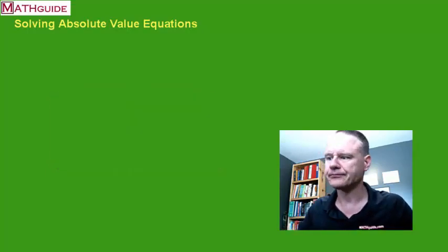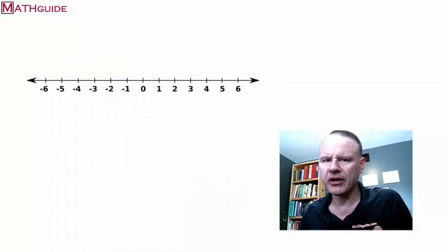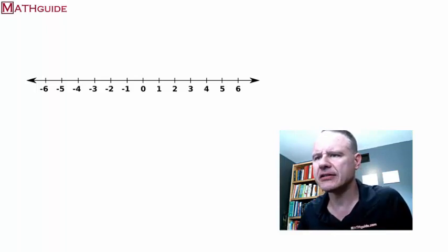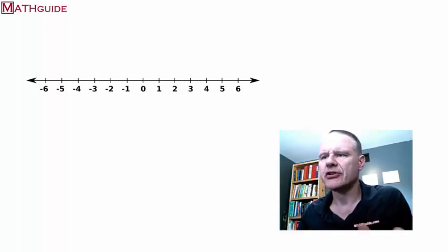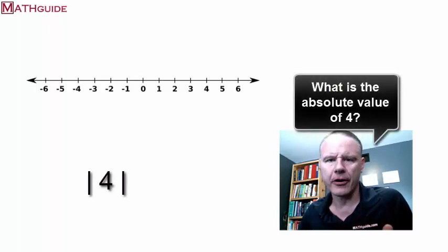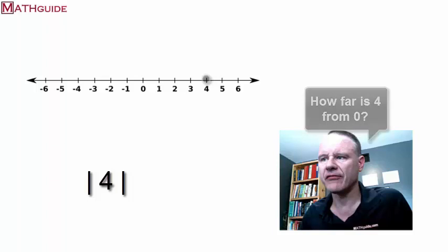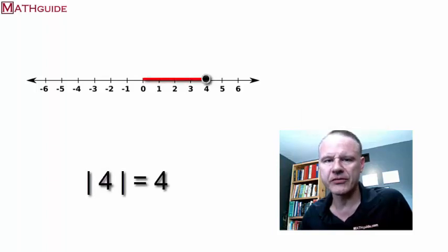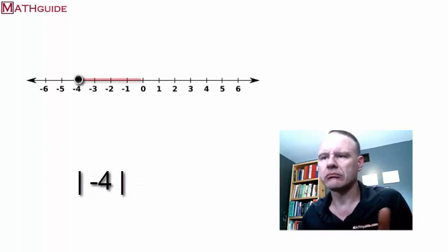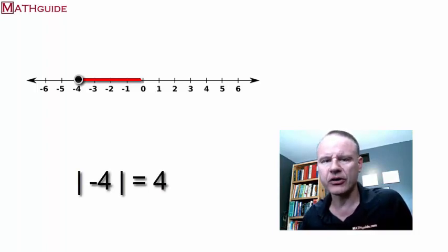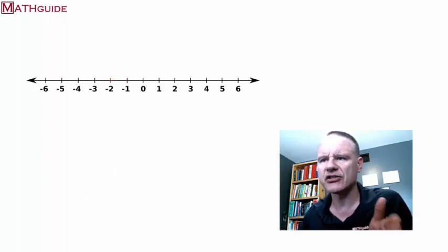Let's take a look at a number line. It's always nice to look at a graphical approach when we look at these mathematical concepts. So what's the absolute value of four? Four is four units away from zero. Now let's take a look at the absolute value of negative four — also four units away from zero. So it's just counting the distance from zero.